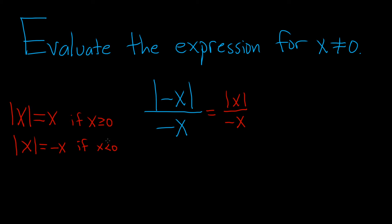So now we just have to do each piece individually. So if x is greater than or equal to 0, we have this piece here. The top piece is going to be x, so it's x over negative x, and that gives us negative 1.